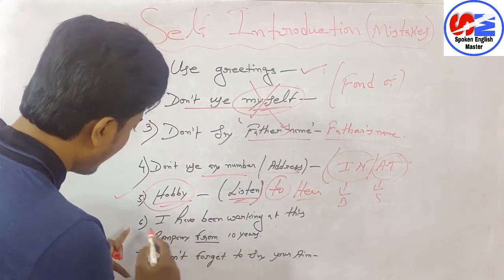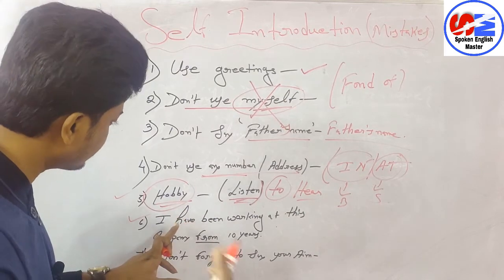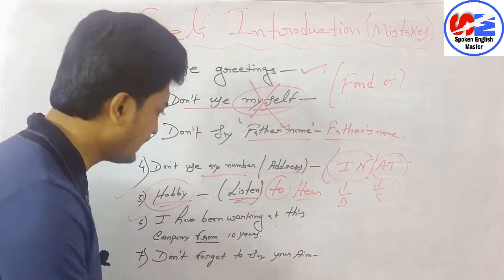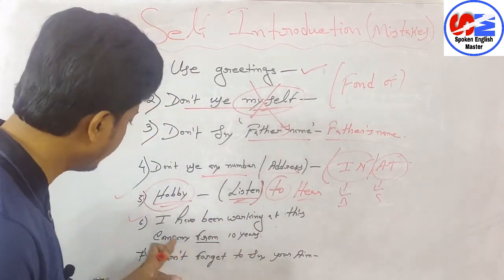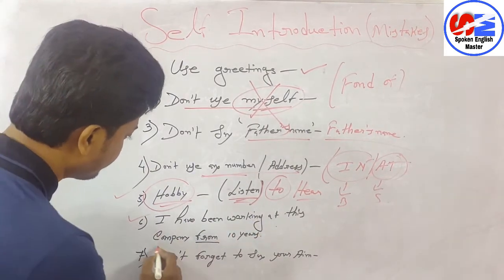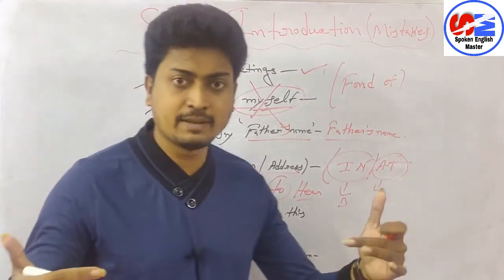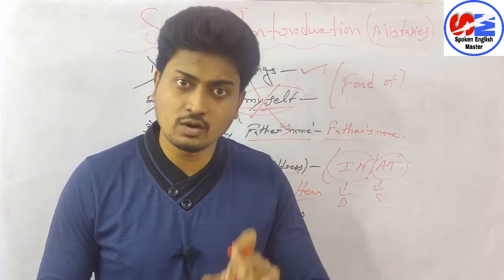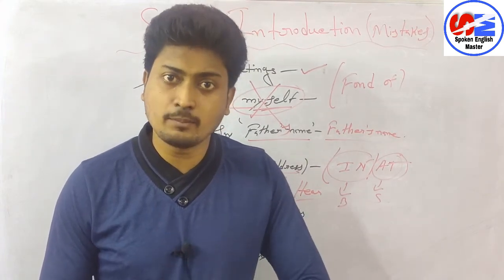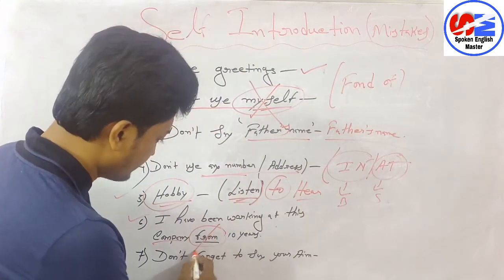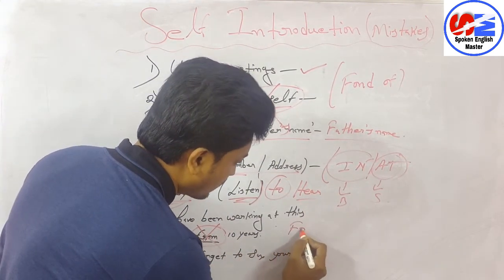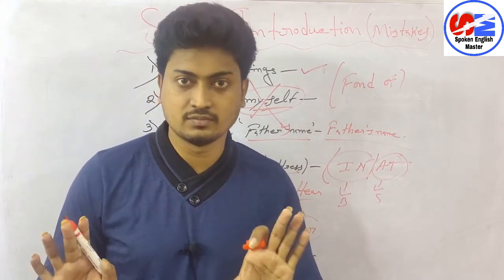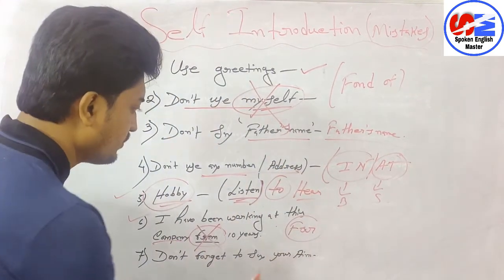Mistake number six: while saying your experience, many students say 'I have been working at this company from 10 years' — this is absolutely wrong. It should be 'for' — 'I have been working at this company for 10 years.' Not 'from,' but 'for.' Take care of this.